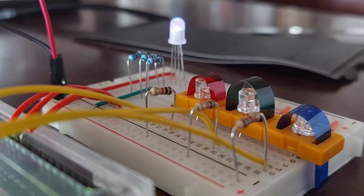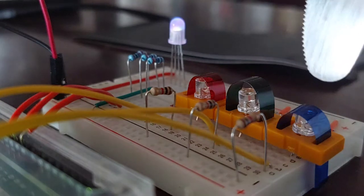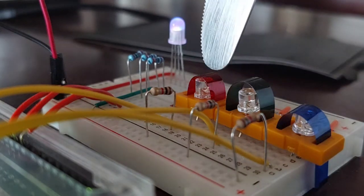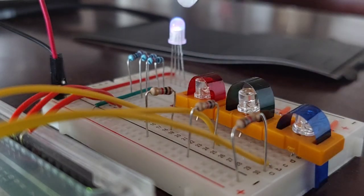Arduino Projects Book project number four: color mixing lamp. So the ambient light that these three sensors are picking up results through this RGB LED in the color you're seeing.